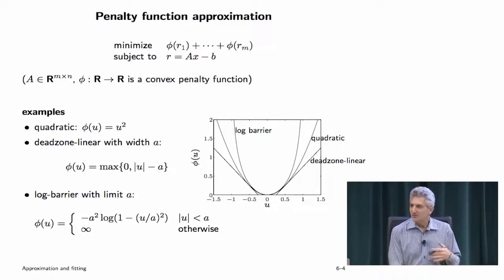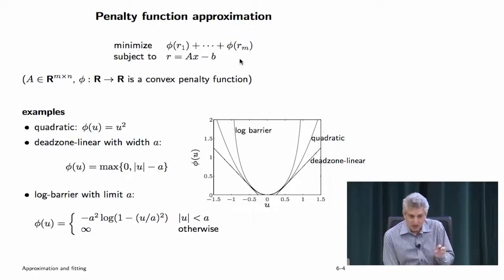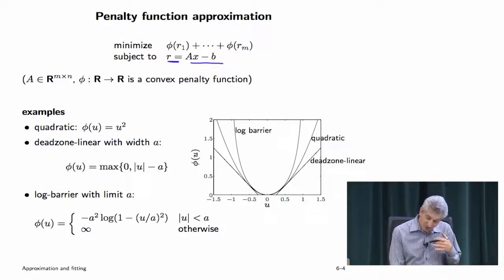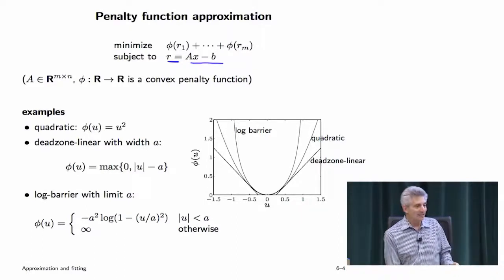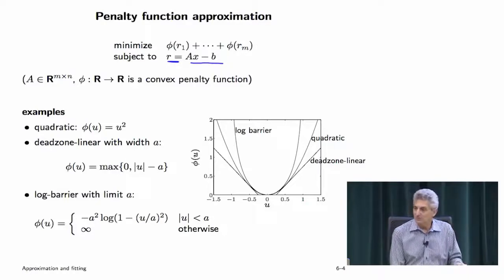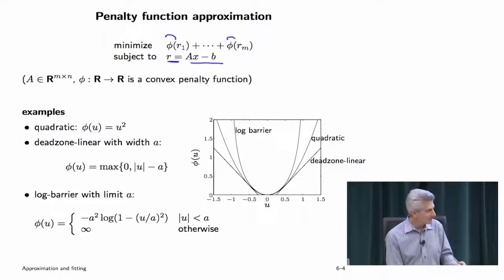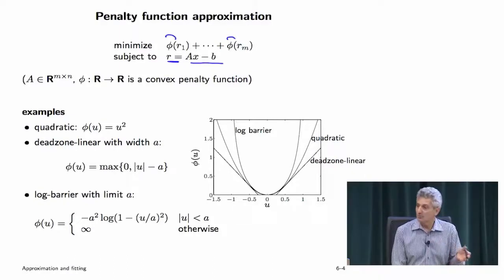Now we're going to look at a generalization of norm minimization. We'll introduce Ax minus b and call that the residual r. What you want is essentially all entries of r to be small — ideally zero, which would mean Ax equals b exactly. But assuming that's not the case, you're going to have to compromise. So we'll penalize values of r by a function phi, just a function from R to R, and minimize the sum of the penalties.